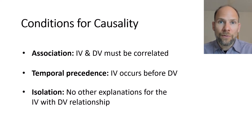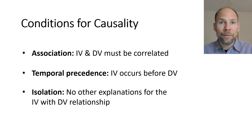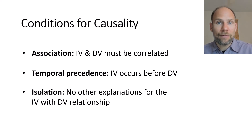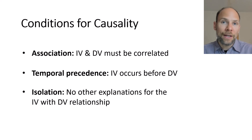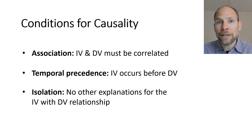What also needs to be shown for causality is isolation. Isolation means there cannot be any other explanations for the independent variable to dependent variable relationship. There could be third variables or covariates that cause variation in both the independent and dependent variables — confounders of the IV-DV relationship. The association between the IV and DV may be spurious, due to a third variable. Even temporal precedence doesn't help if those confounders have not been measured, since a longitudinal association may still not be indicative of causality.